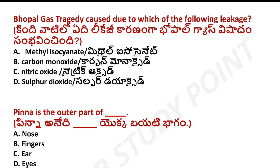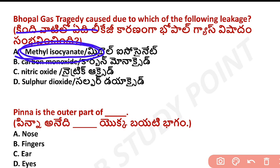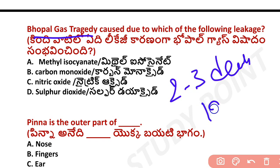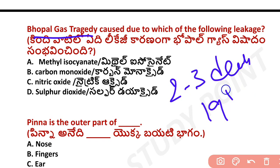The Bhopal gas tragedy is very important. It occurred on the night of December 2nd and 3rd, 1984 in Bhopal. It was the worst industrial disaster, in which thousands of people died and countless others were injured. It involved a methyl isocyanate gas leak.